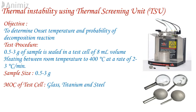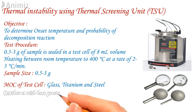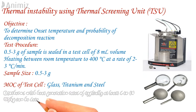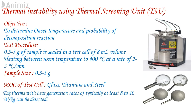Any heat generation — i.e., exotherm — or heat absorption — i.e., endotherm — is observed as a deviation from the baseline. Exotherms with a heat generation rate of typically at least 8 to 10 Watts per kg can be detected.